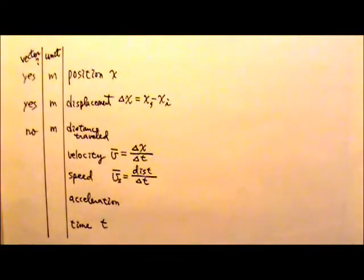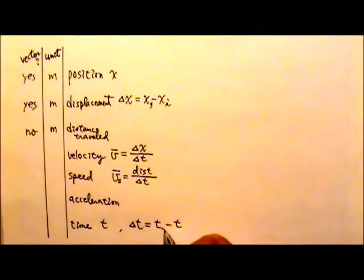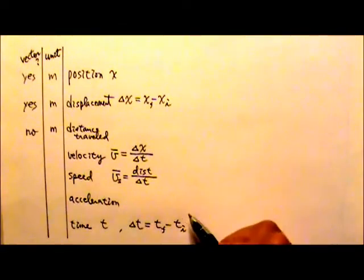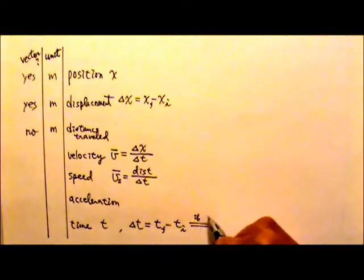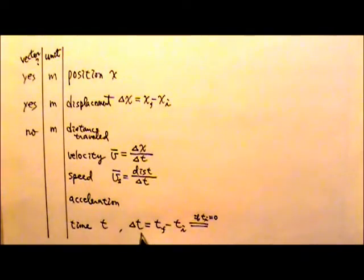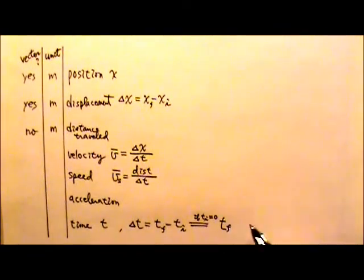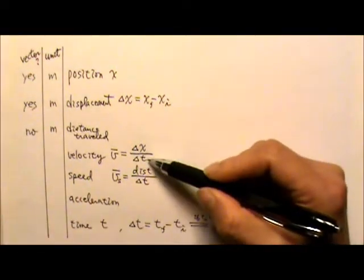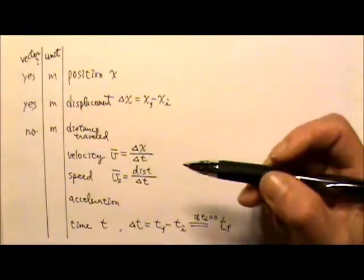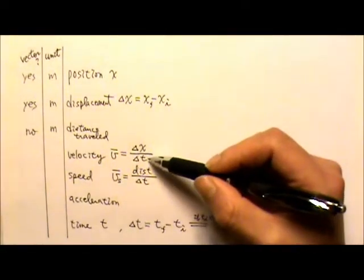We use t for time. Delta t is the final value minus the initial value, but most of the time we start our timer at the very beginning. So if your timer starts at zero, delta t — the change in time — will be the same as the time itself. Sometimes we don't bother to say delta t; we can just say 'time,' meaning the time duration for an event.